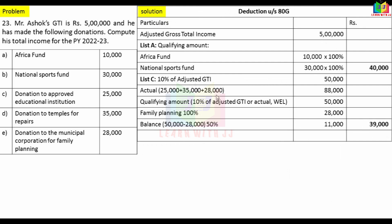The 10% of GTI is the limit for List C. The family planning donation qualifies at 100%, which is 28,000. The balance of 22,000 qualifies at 50%, giving 11,000. So total List C deduction is 28,000 plus 11,000 equals 39,000. Total 80G deduction is List A 40,000 plus List C 39,000 equals 79,000.